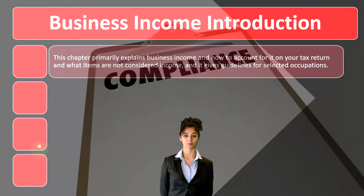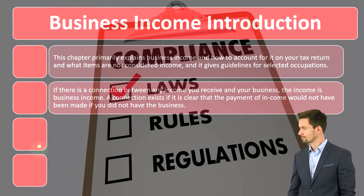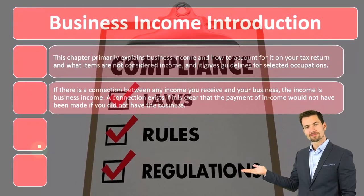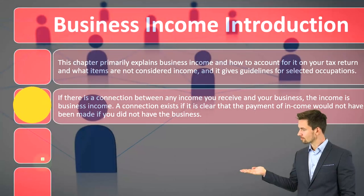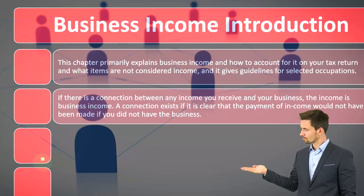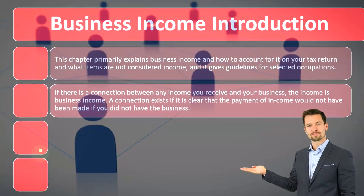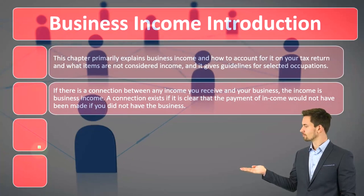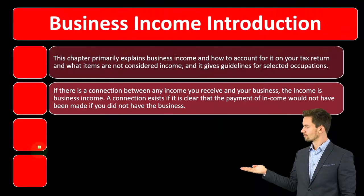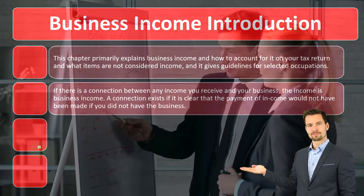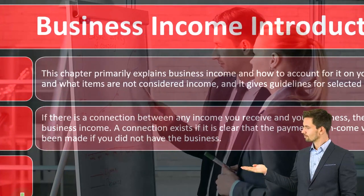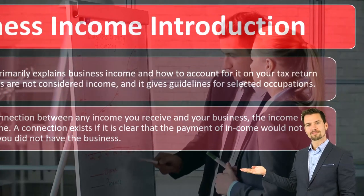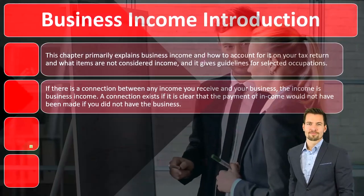The chapter also gives guidelines for selected occupations, since different occupations have their own categorizations and specific items related to them. If there is a connection between any income you receive and your business, the income is business income — because you got it in connection with the business. A business, as we've discussed, requires a profit motive. A connection exists if it is clear the payment would not have been made if you did not have the business.